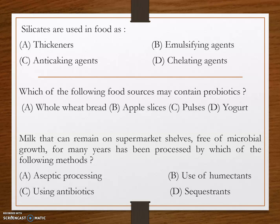Next question: which of the following food sources may contain probiotics? The answer is option D — yogurt. Probiotics are live bacteria and yeast that are good for human health, especially needed by our digestive system.